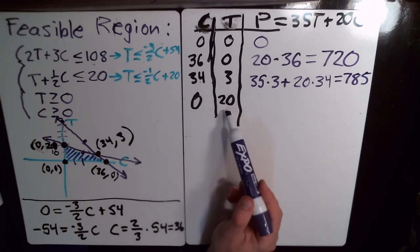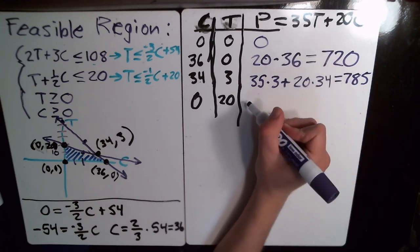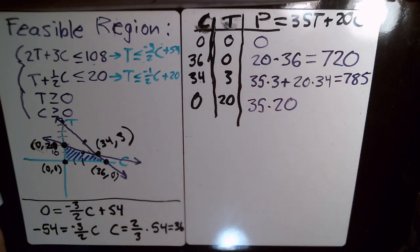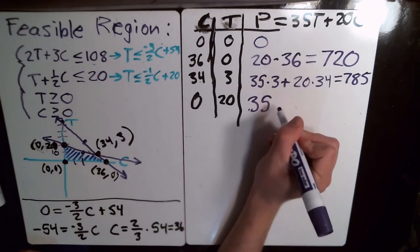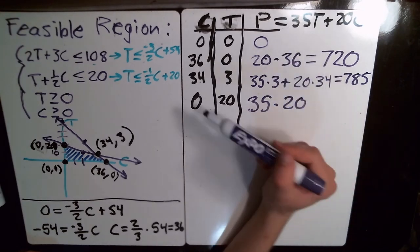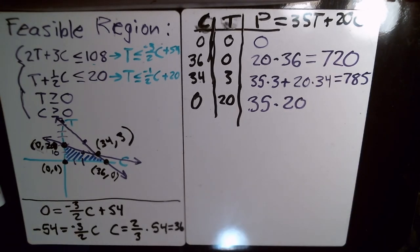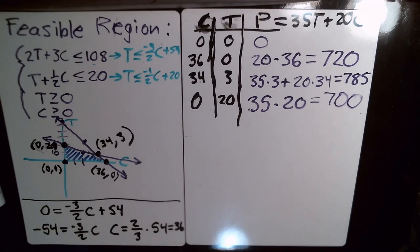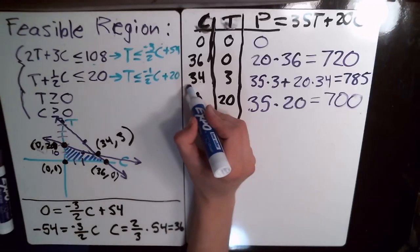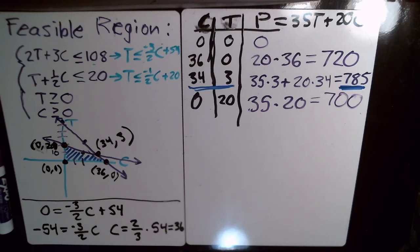At (0, 20): 0 chairs and 20 tables. Profit = 35×20 + 20×0 = 700. Looking at all these results, the best option is (34, 3) because we get the most money — $785 profit. So the right answer is 34 chairs and 3 tables per day.